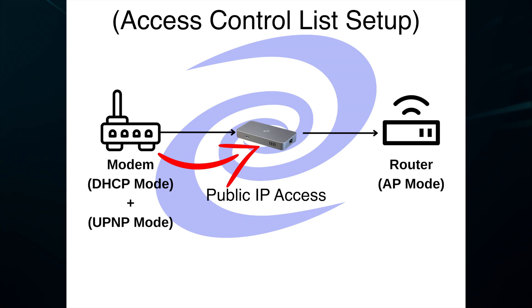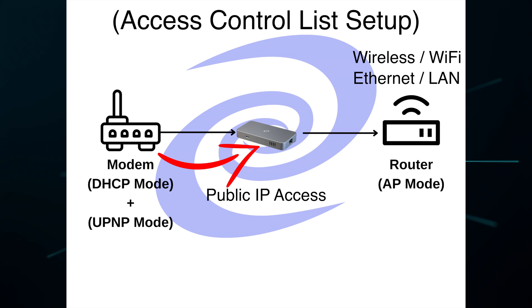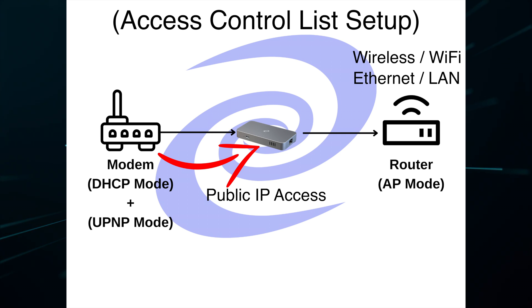Anything connected to the router, whether it's via Wi-Fi or LAN, will be able to be seen by the access control list on your Deeper Connect, and then your modem will do the rest of the IP addressing.